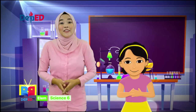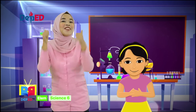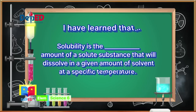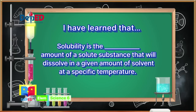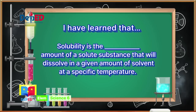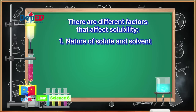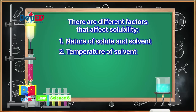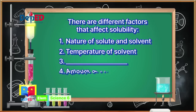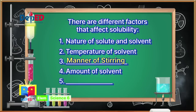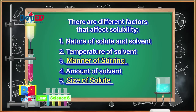Can you help Sissy again? Great! We have to analyze and complete the paragraph. I have learned that solubility is the blank amount of a solute substance that will dissolve in a given amount of solvent at a specific temperature. There are different factors that affect solubility: Number 1 — Nature of solute and solvent. Number 2 — Temperature of solvent. Number 3 — Blank. Number 4 — Amount of solvent. Number 5 — Blank.